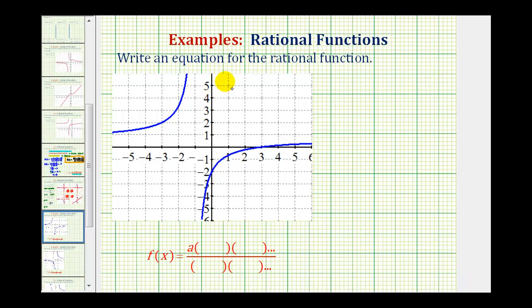In this problem, we want to find an equation for the rational function based upon the graph. To do this, we'll find the function in factored form, where a is a constant, and we'll have factors in the numerator and factors in the denominator.